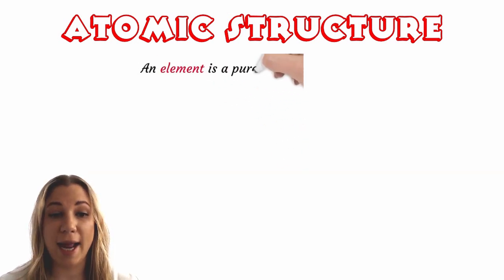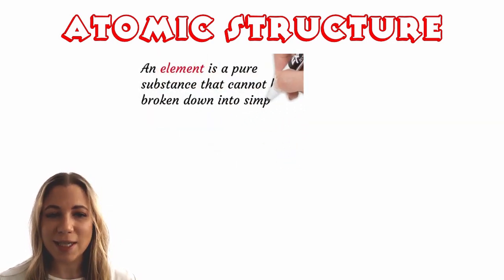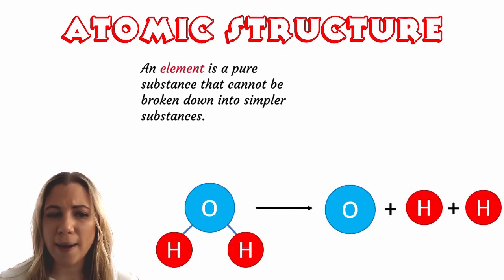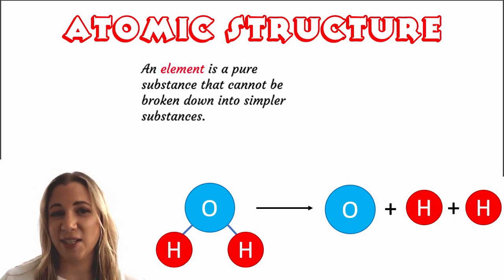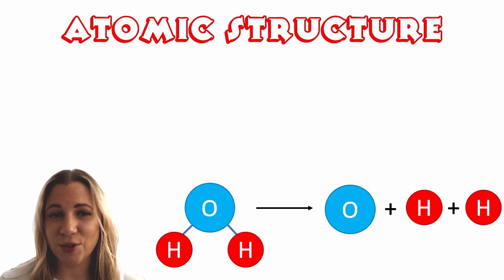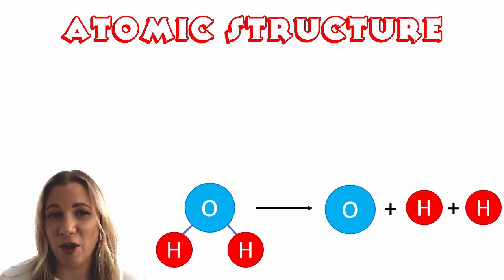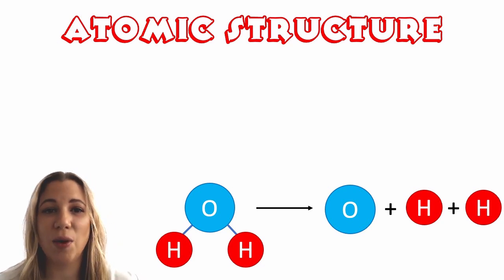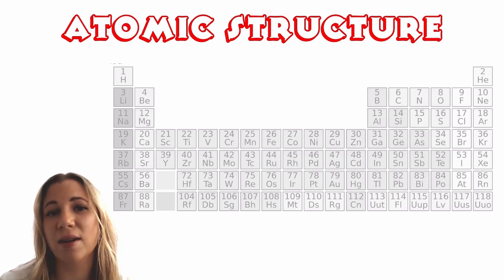To understand what an atom is we first need to understand what an element is. An element is a pure substance that cannot be broken down into more simple substances. For example, water is not an element. It is made up of hydrogen and oxygen, therefore water can actually be broken apart into more simpler pieces. It can be broken up into hydrogen and oxygen, but hydrogen and oxygen cannot be broken up any further. They are as simple as they can get, and so hydrogen and oxygen are both elements. We can find all of our elements on the periodic table.